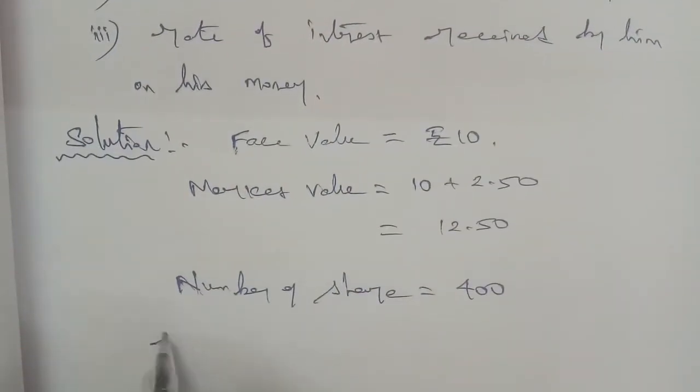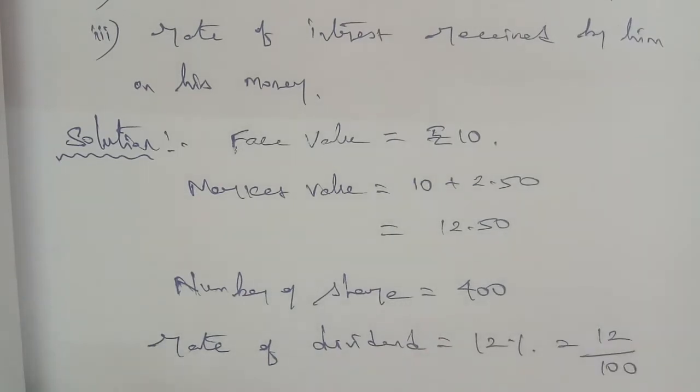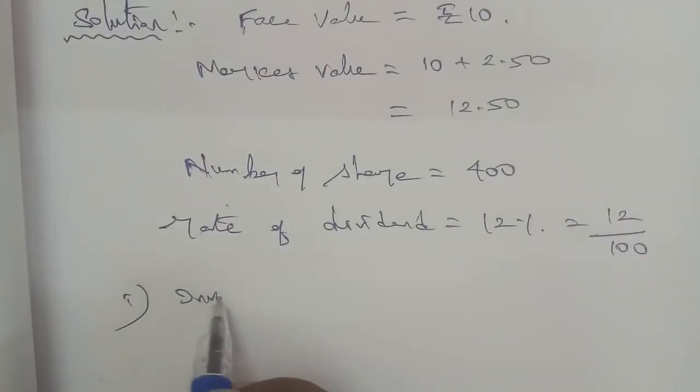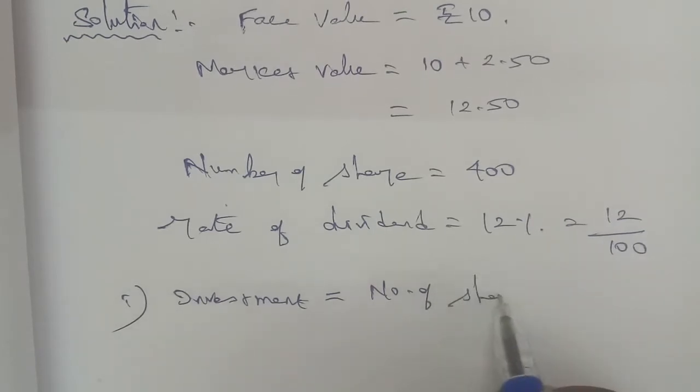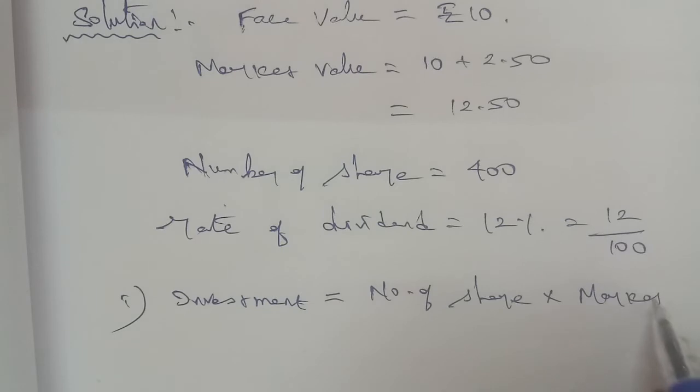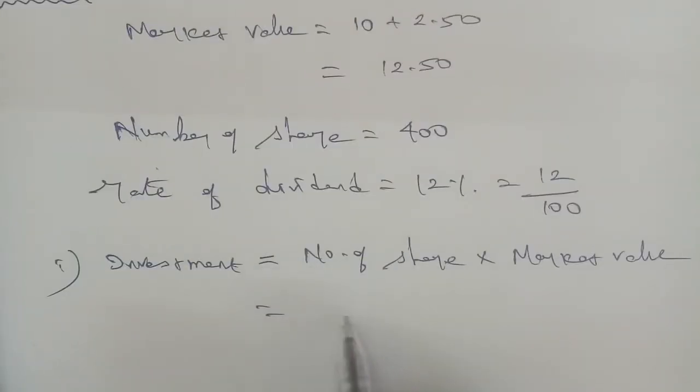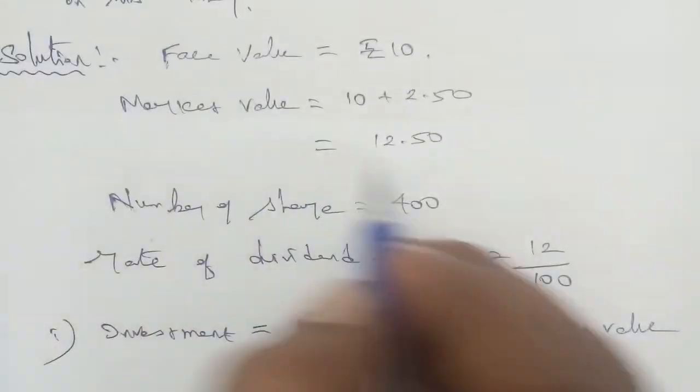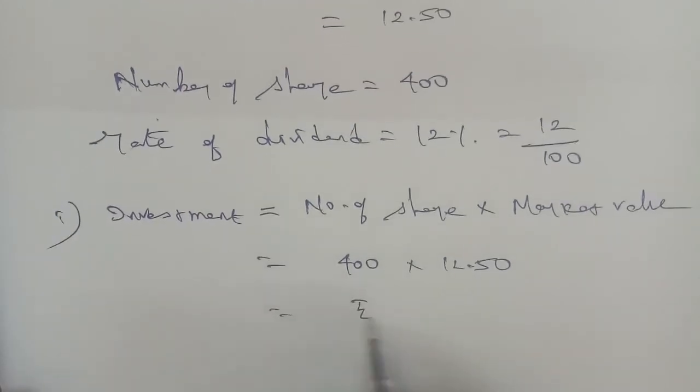Rate of dividend is 12 percent. So for part (i), investment equals 5,000 rupees.